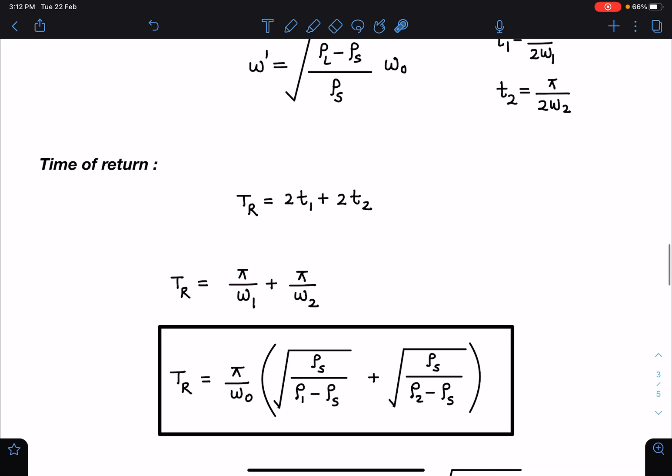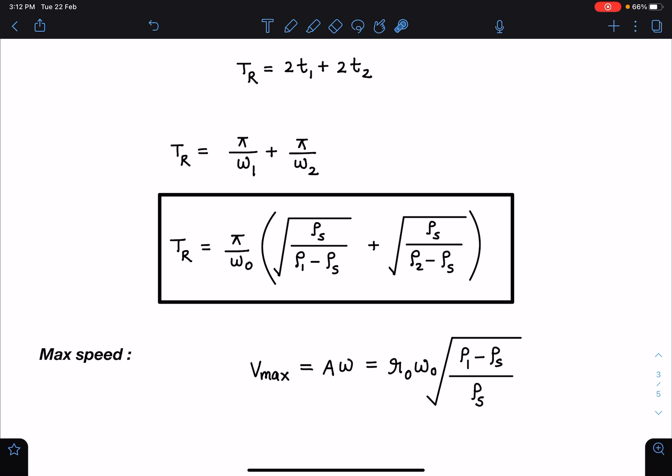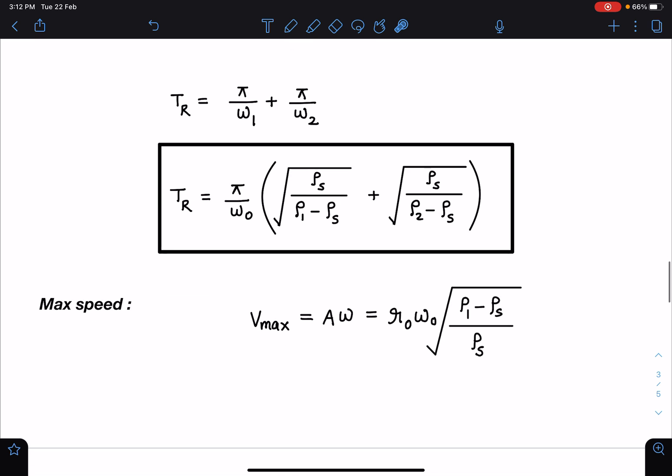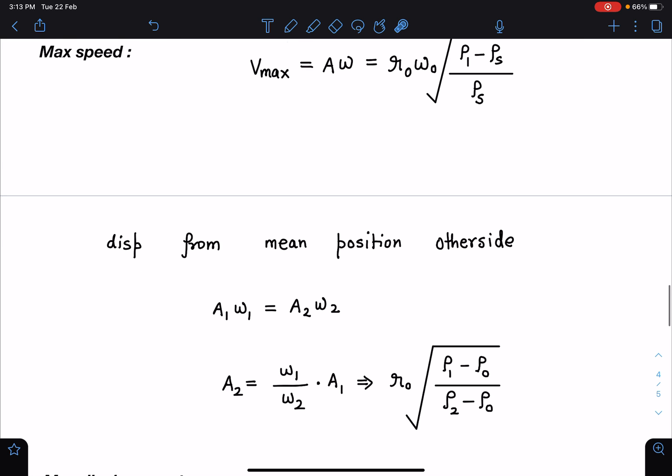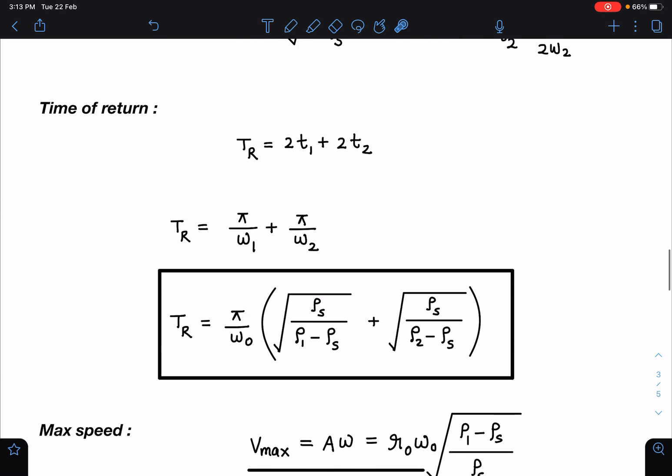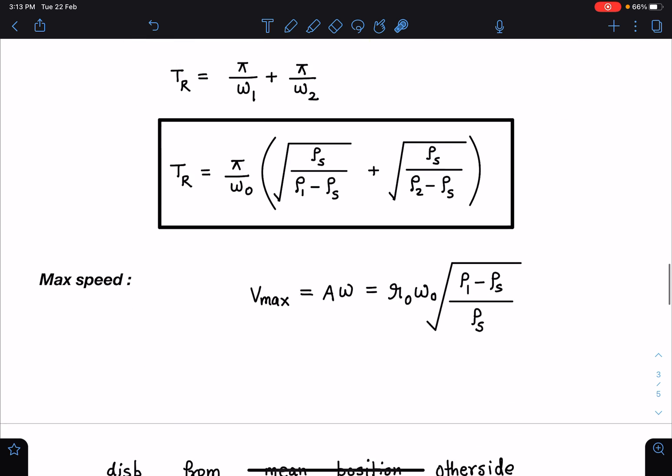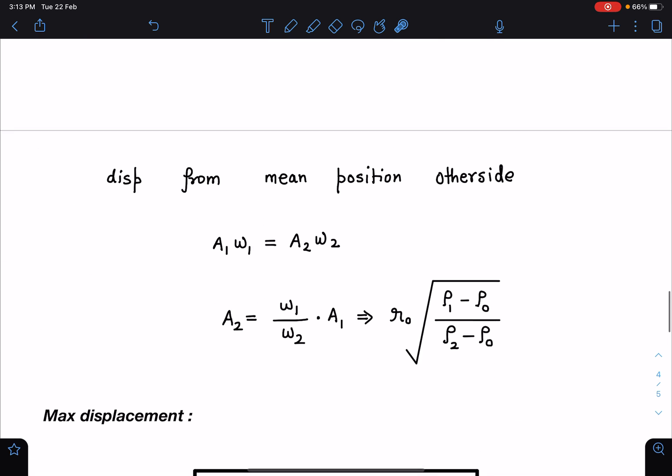Similarly, here maximum speed will come at the axis when particle will cross, so I can use the standard SHM result v max equals a omega. Here you can say a is r naught and this is omega of SHM for the right part, so omega 1 omega 0 times root of rho 1 minus rho s by rho s. Similarly here when particle is moving other side, let's say the displacement is a2, so v max we can equate: v max equals a1 omega 1 and that should be equal to a2 omega 2 as well. So from here a2 we can calculate as omega 1 by omega 2 times a1. Here you can check this is the value of omega 1 and omega 2 we can write corresponding to each liquid, so I'll be getting a2.